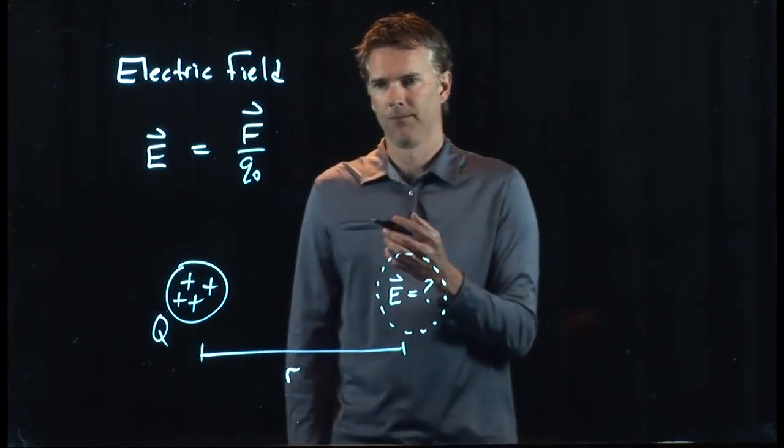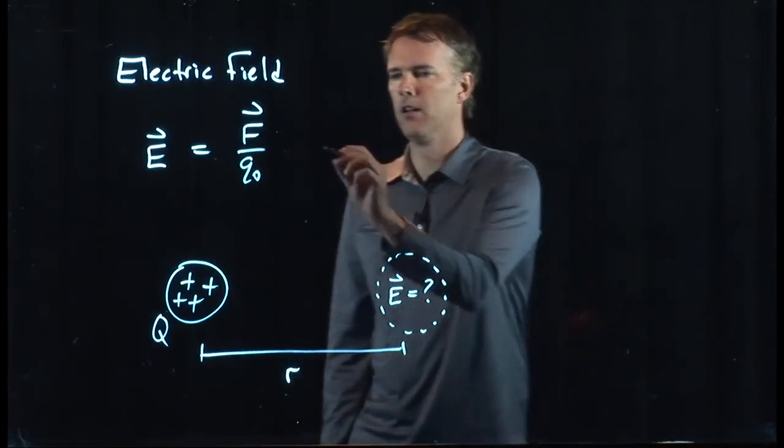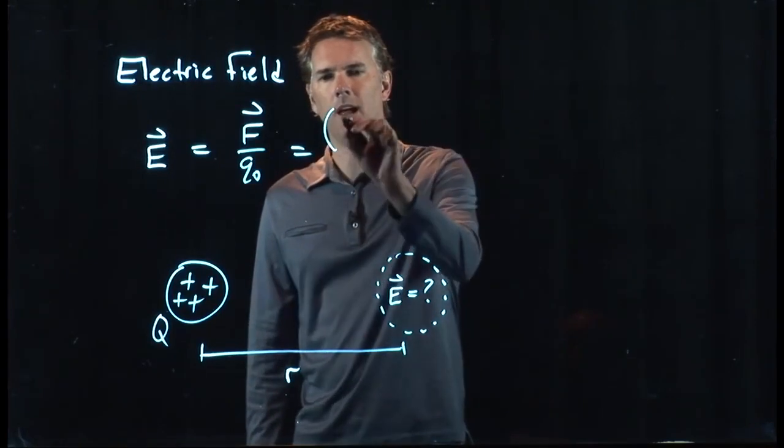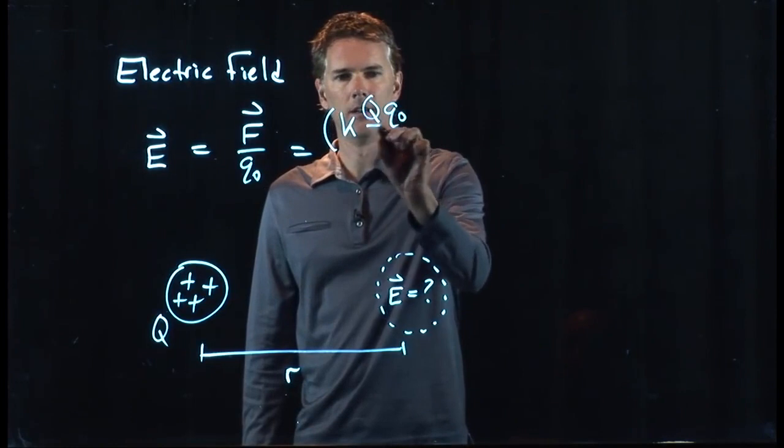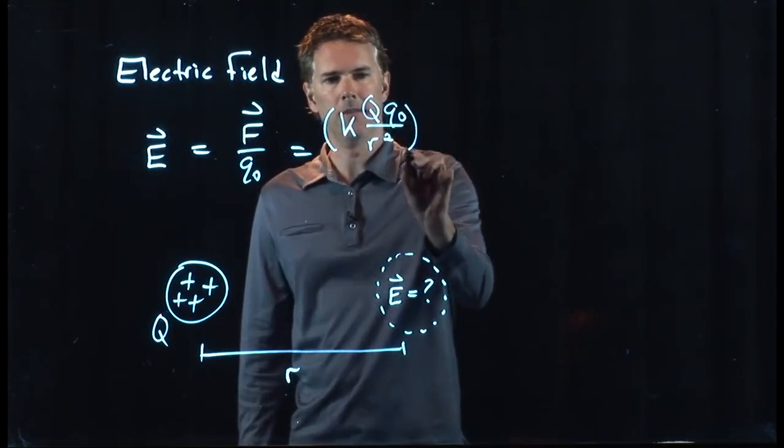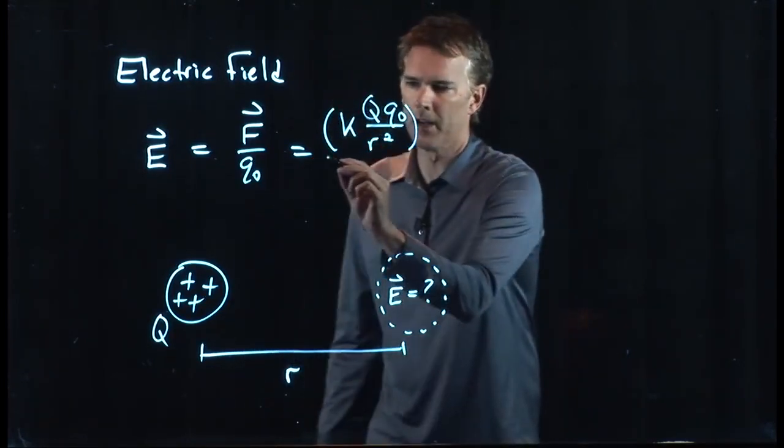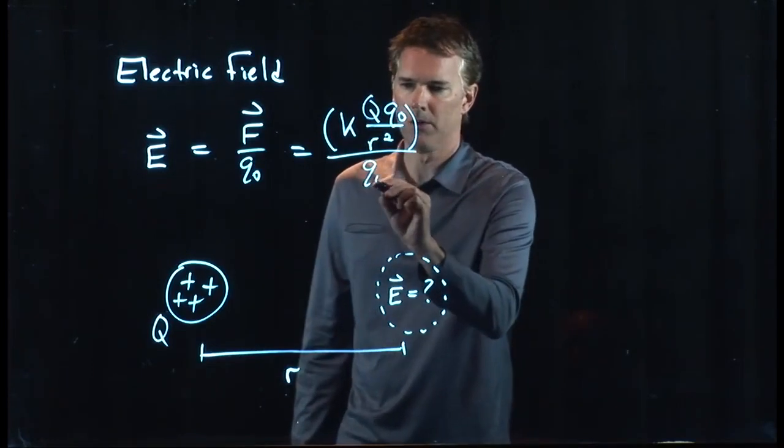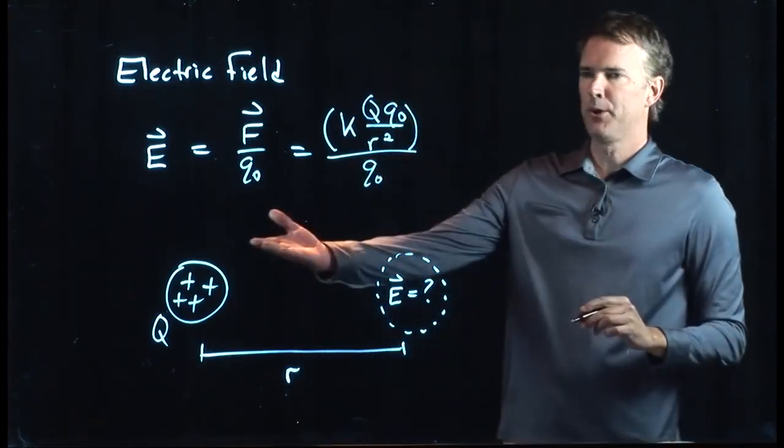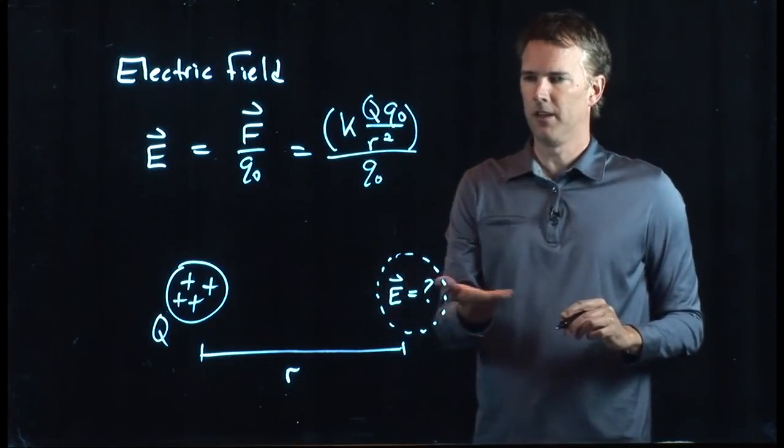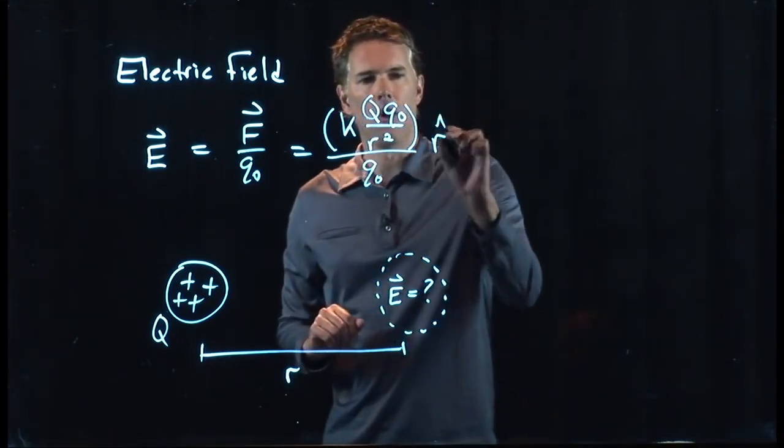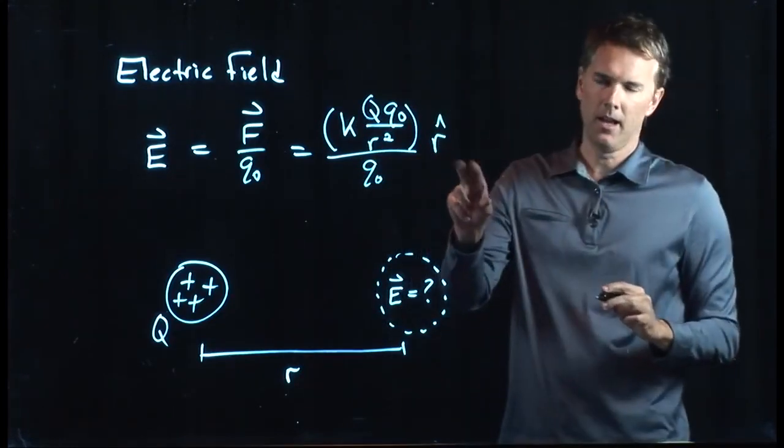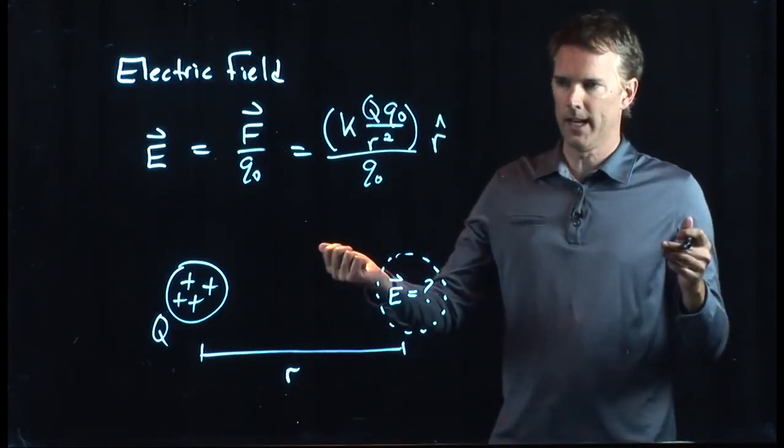But we know what F is. F is Coulomb's Law. So that becomes KQQ-naught divided by R-squared. We're going to divide that whole thing by Q-naught. And there is a particular direction associated with this. We typically call that R-hat. What does R-hat mean?